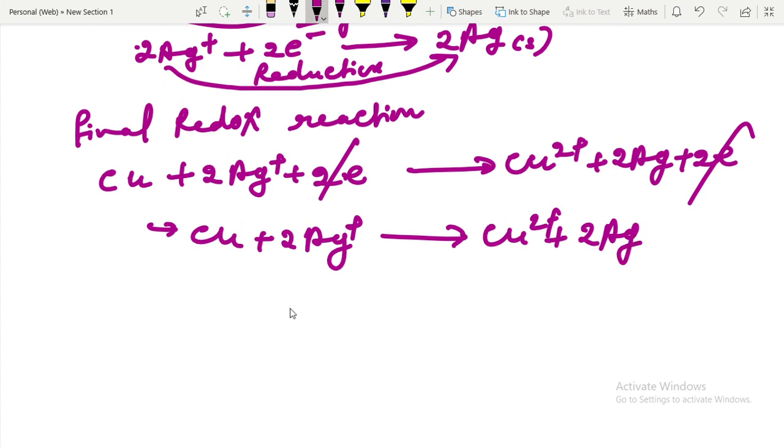What about these nitrate ions in the original equation? As the nitrate ions appear on both sides of the equation, they are called spectator ions.